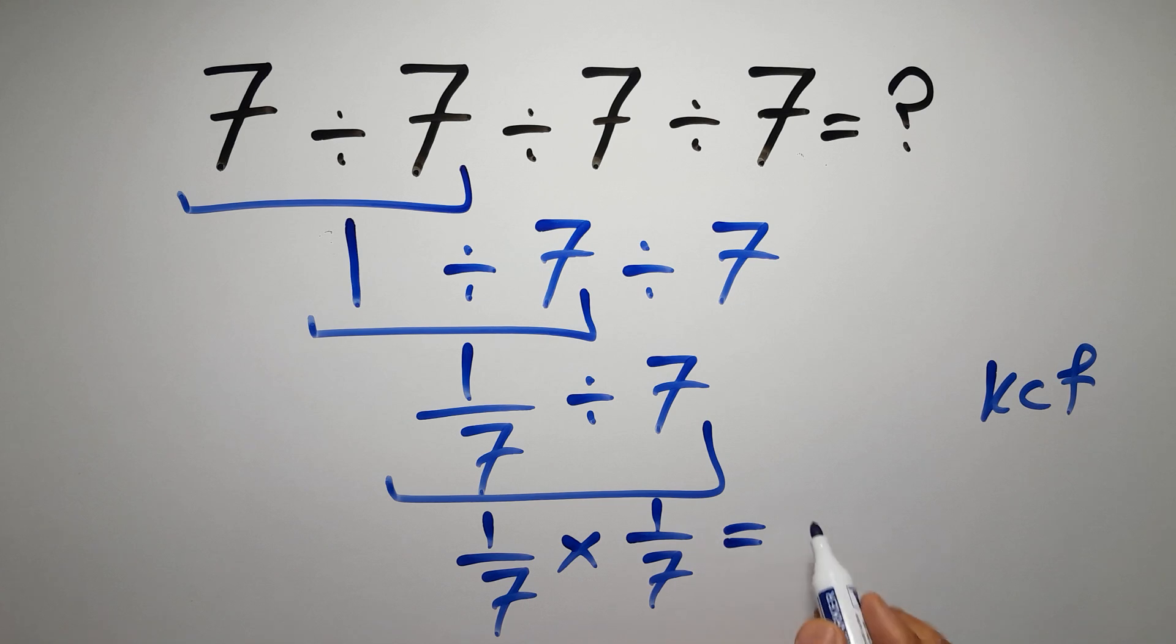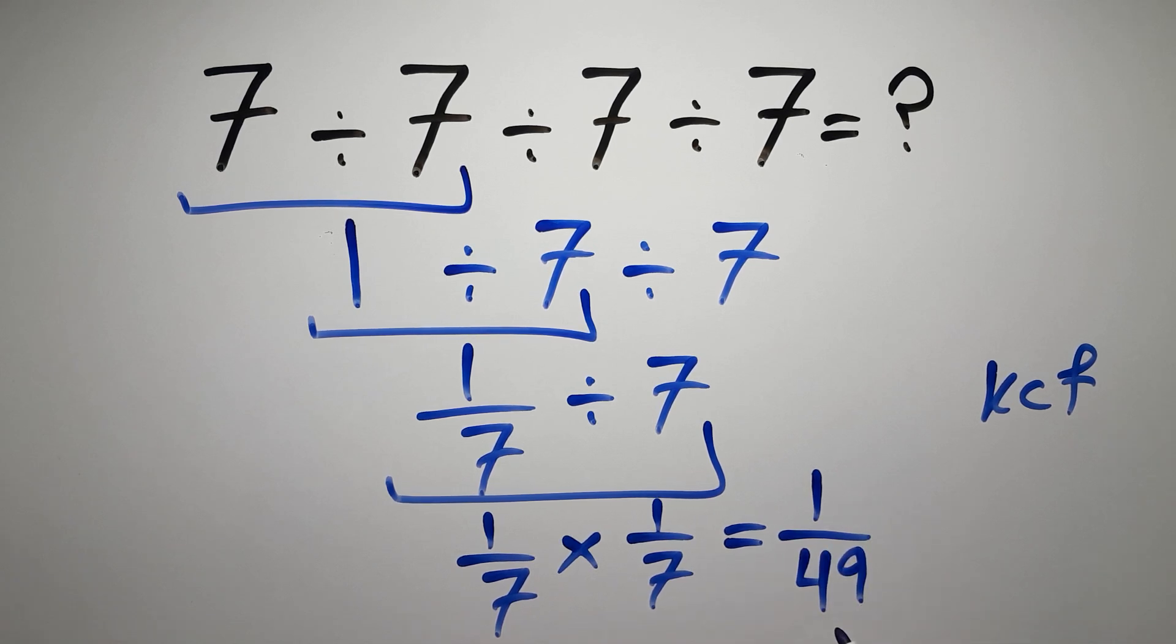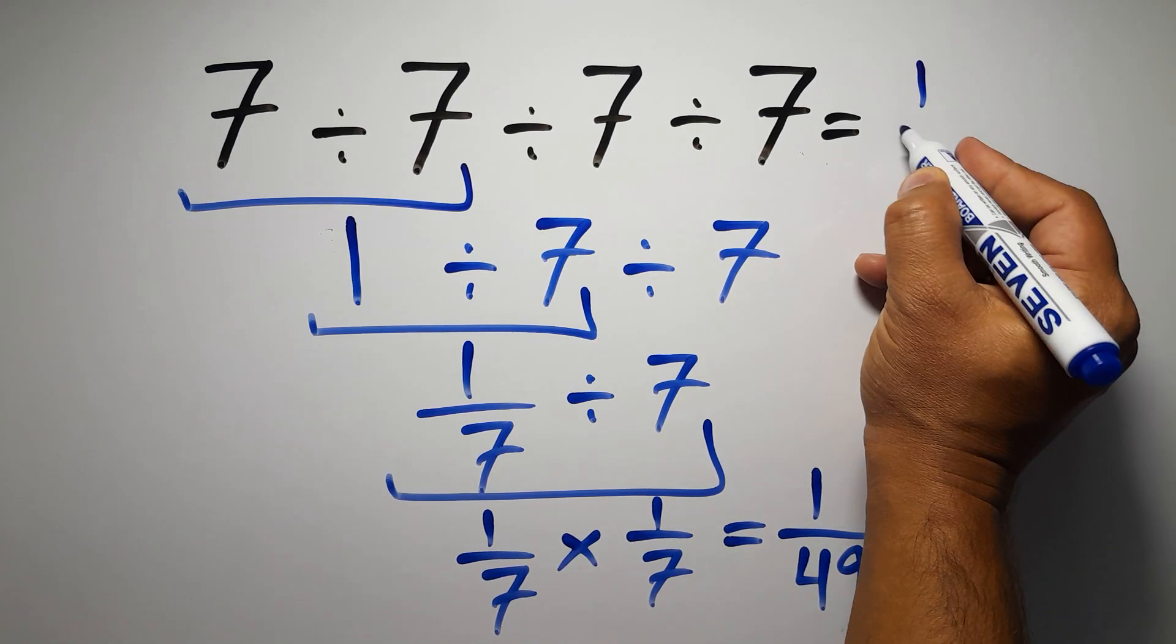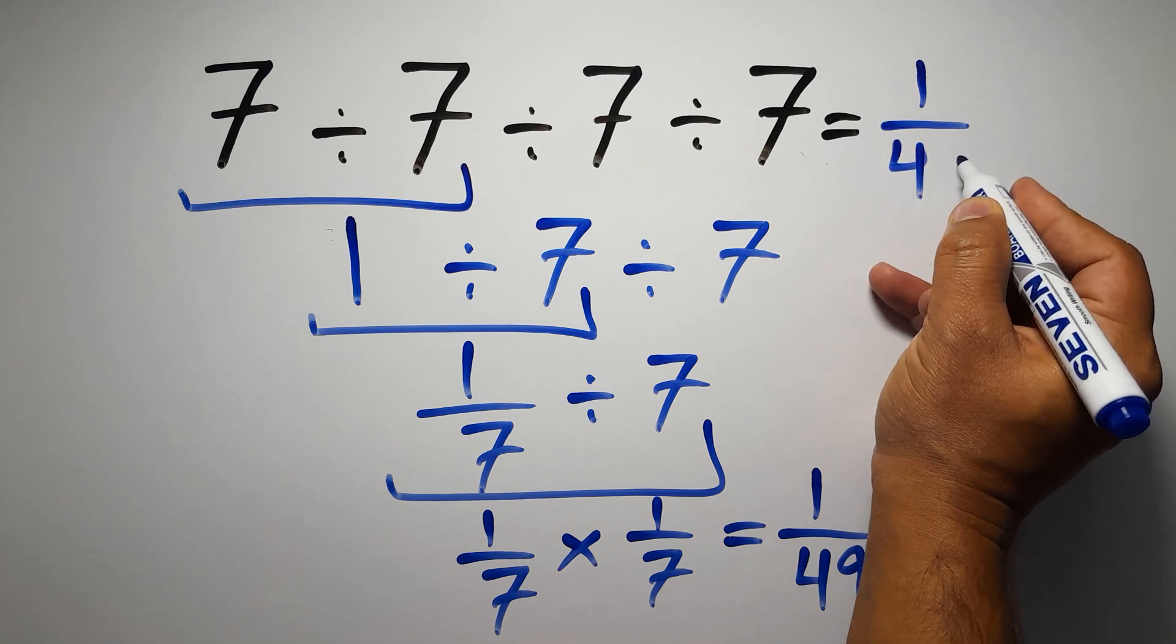1 times 1 gives us 1, so 1 over 7 times 7, which equals 49. So 1 over 49, and this is our final answer to this problem. The correct answer is 1 over 49.